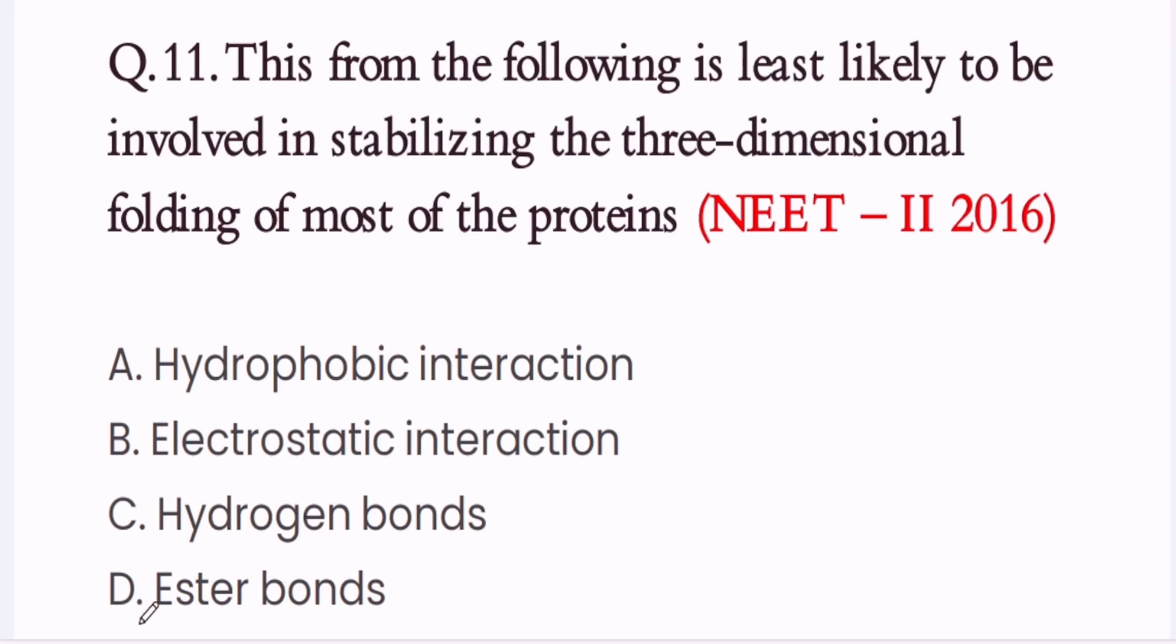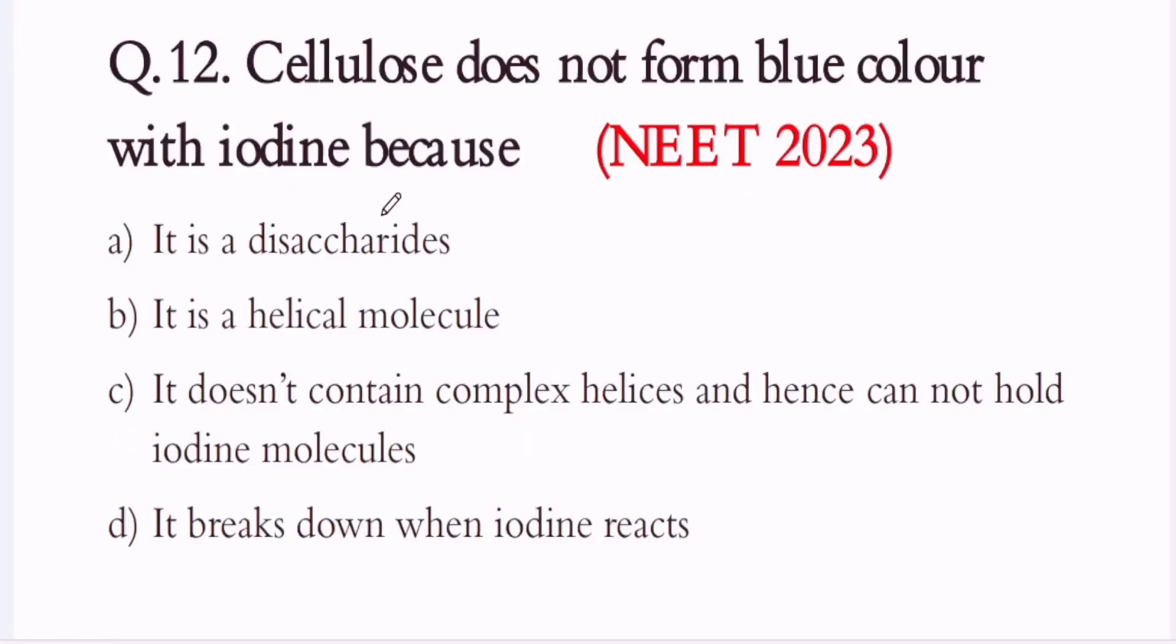Question 12. Cellulose does not form blue color with iodine because: A. It is a disaccharide. B. It is a helical molecule. C. It doesn't contain complex helices and hence cannot hold iodine molecules. D. It breaks down when iodine reacts. So here the correct option is C. It doesn't contain complex helices and hence cannot.